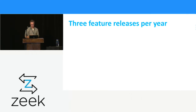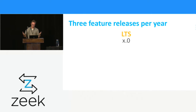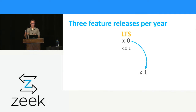We aim to have three feature releases per year. It starts with a .0 release — right now the latest would be 5.0 — and that is our long-term support release, so we will continue to apply backports and security fixes to that release. It usually comes out late in the year. As time goes by there might be bug fix releases, so we might do a .0.1. When about a third of the year has gone by, there is the next feature release — that would be .1; 5.1 is about to come out.